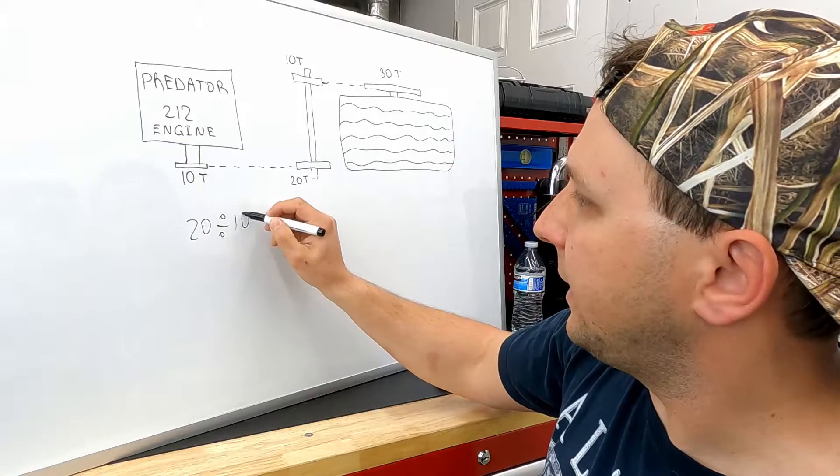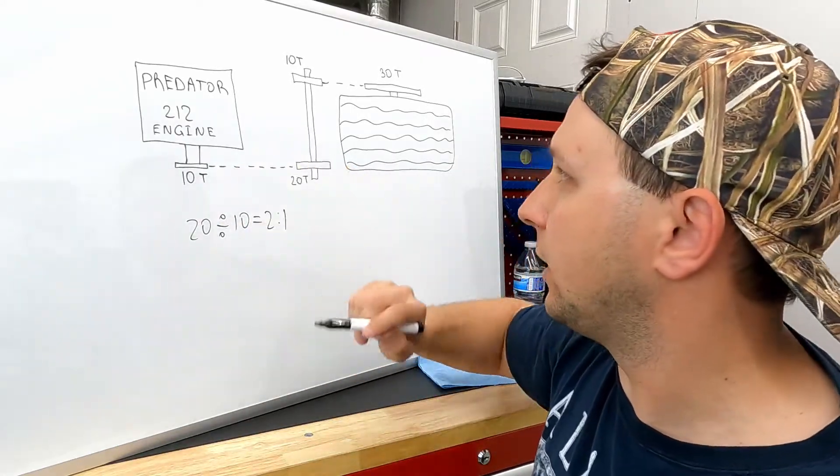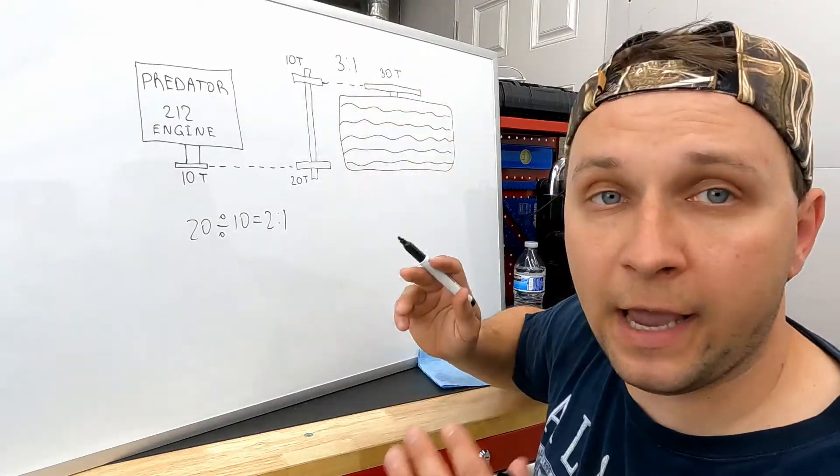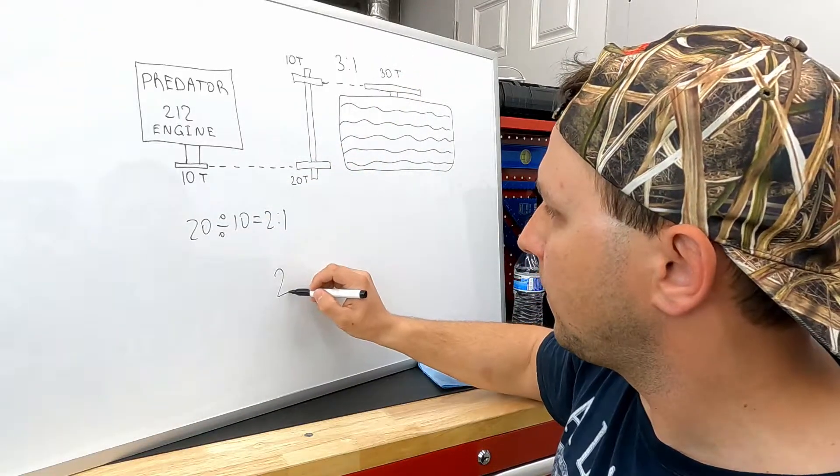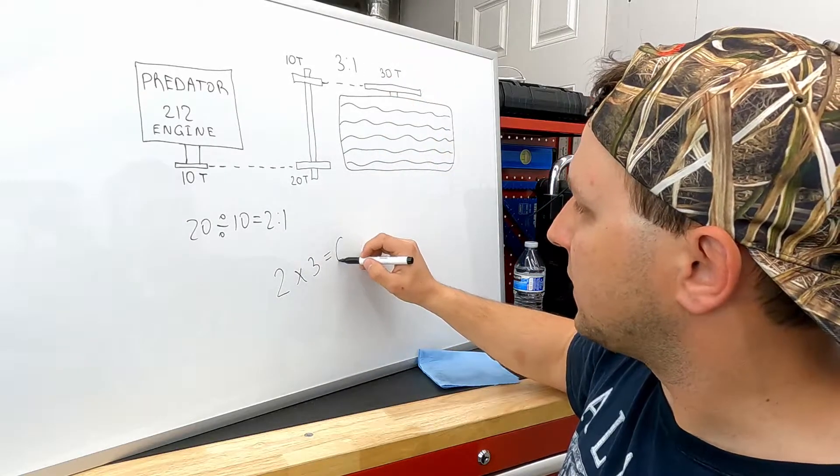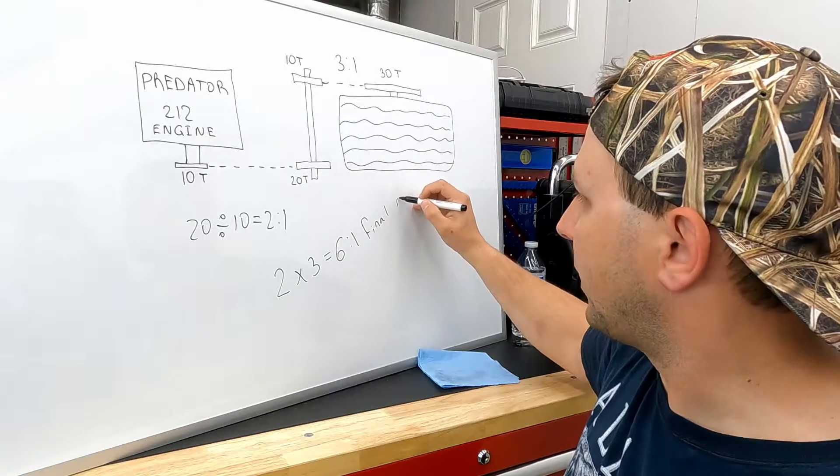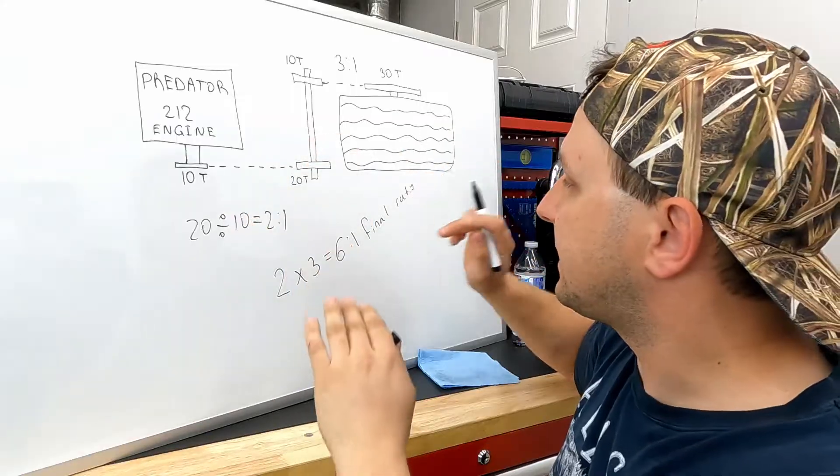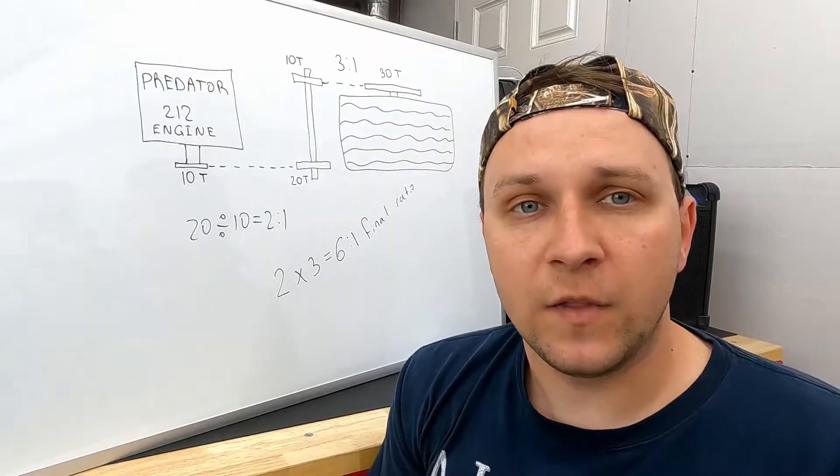That gives us a 2 to 1 gear ratio. And this chain link here we're gonna have a 3 to 1 gear ratio. Now we have to times those two results. This chain link has a 2 to 1, this one has 3 to 1, so 2 times 3 gives us 6 to 1 final ratio. That means this whole setup with the jack shaft has a 6 to 1 final gear ratio.